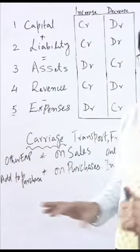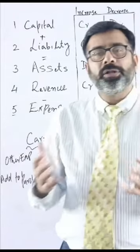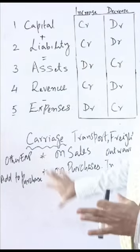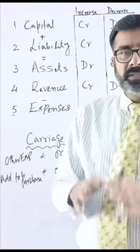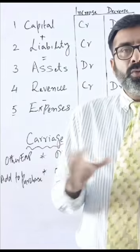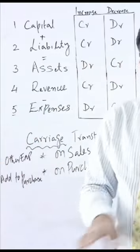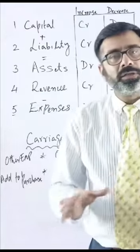If there is a carriage on the sale, that will be written as operating expenses. But the carriage on the purchases will be added to the cost of the purchases. So the treatment is different, but both are carriages. One is the expense and other is also expense but that is added to the cost of the purchases.